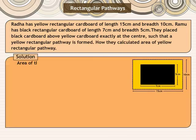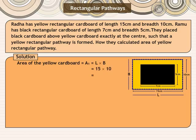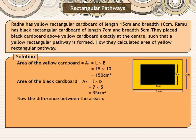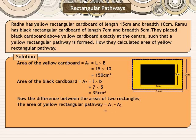Here is the solution. Area of the yellow cardboard A1 is equal to L into B, that is equal to 15 into 10, equals to 150 cm square. Area of the black cardboard A2 equal to L into B, that is equal to 7 into 5, equal to 35 cm square. Now, the difference between the areas of two rectangles is the area of yellow rectangular pathway, equal to A1 minus A2, that is equal to 150 minus 35, equals to 115 cm square.